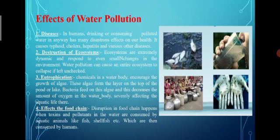Next is eutrophication. Chemicals in the water body encourage the growth of algae. These algae form a layer on the top of the pond or lake. Bacteria feed on these algae, and this decreases the amount of oxygen in the water body, affecting the aquatic life there. Effects on food chain: Disruption in the food chain happens when toxins and pollutants in the water are consumed by aquatic animals like fish and shellfish, which are then consumed by humans.